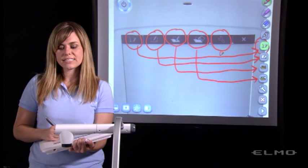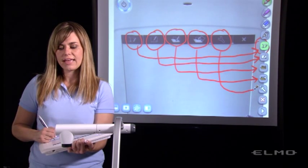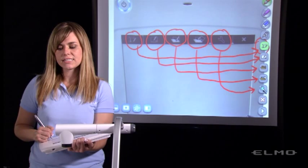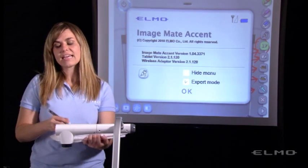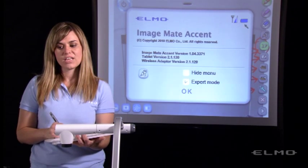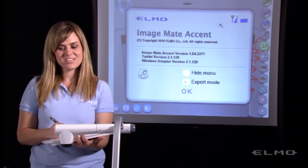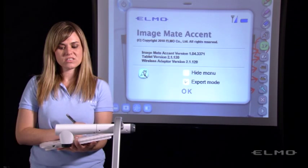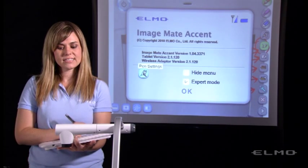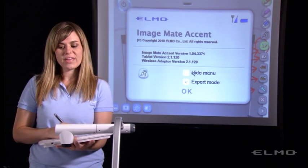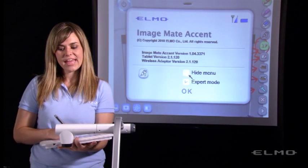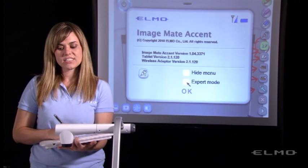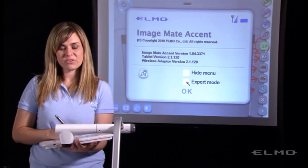Then, we have our settings quick key. And in settings, we can see the connection level, the battery level. We can also go to the pen settings. We can hide the menu. And you can change it from expert mode. That will limit some of your features.